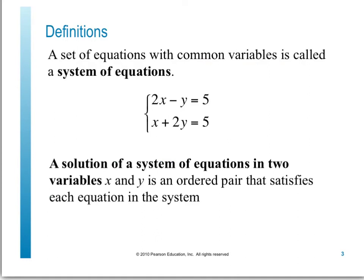A system of equations is basically a set of equations with common variables. For example, 2x minus y equals 5, and x plus 2y equals 5. This is a system of equations — just two equations with the same variables.